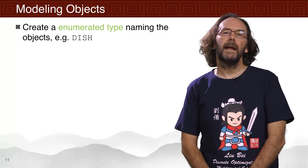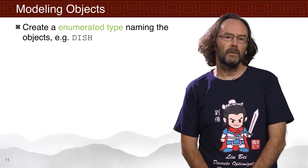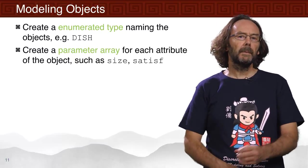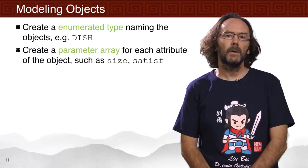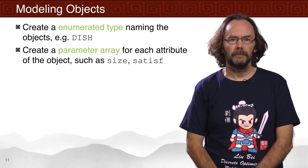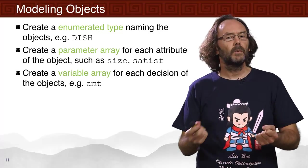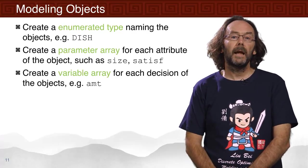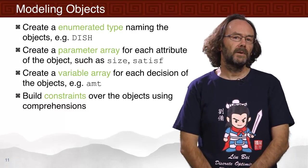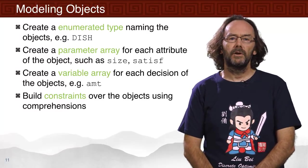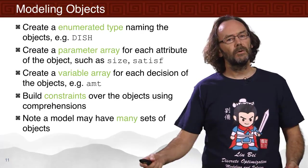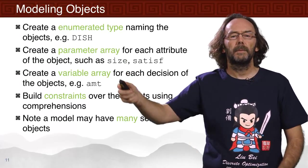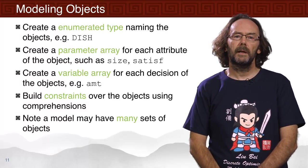So what have we seen here? We've seen basically how we model objects in MiniZinc. Typically, we create an enumerated type that names the object — in this case, the dish. Then we create a parameter array for each attribute of the object we need to reason about: here we had size and satisfaction amount. Then we create a variable array for each decision we need to make about that object — in this case, how many of each dish to get, giving us the variable array 'amount'. Then we build constraints over the objects using comprehensions. Complicated models will have many sets of objects with different enumerated types and parameter arrays.